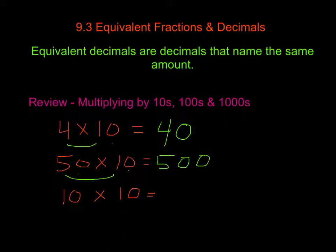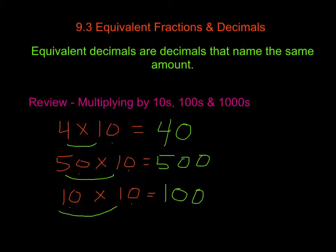Here we have 10 times 10. Once again, 1 times 1 is 1, and we have 2 zeros, so that gives us 100. When we're multiplying by 10, all we're doing is adding a zero.